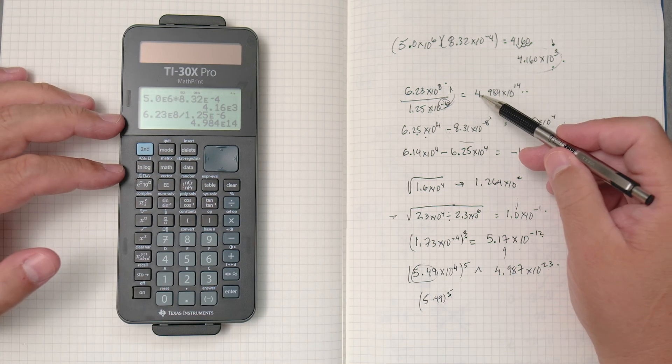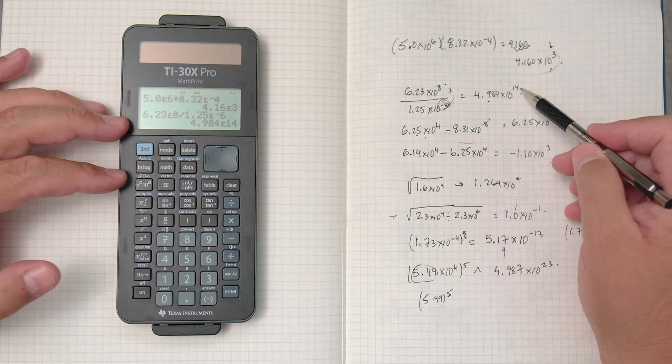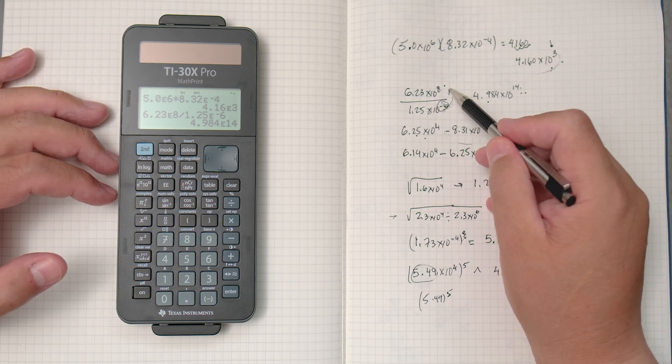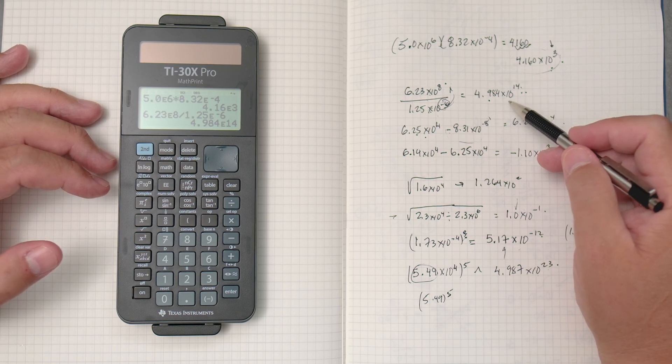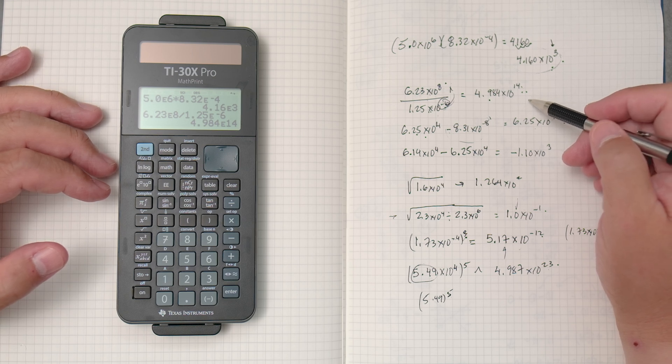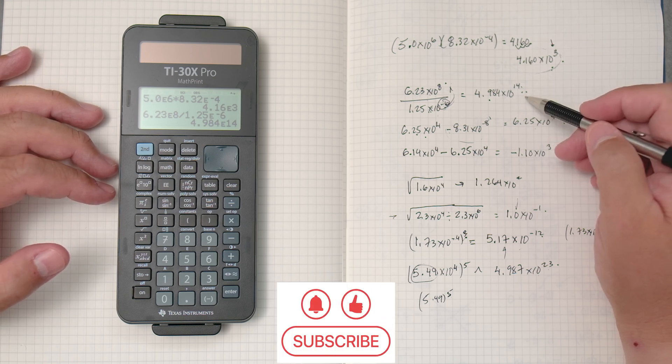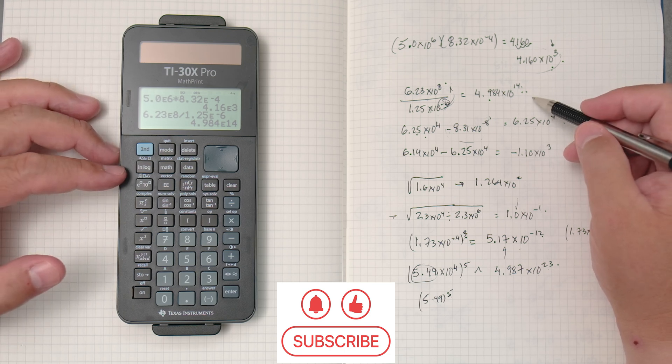We get 4.984 times 10 to the 14th. This negative 6 goes up, it becomes a plus 6 and gives you 14. If you want to know how to do this type of math manually, step by step, check out my video. I show you how to do it manually and then you can check it up with the calculator.